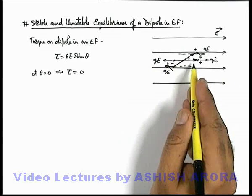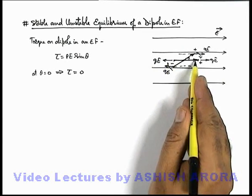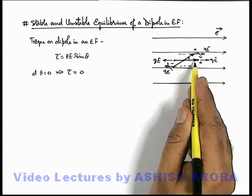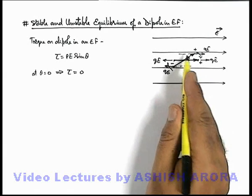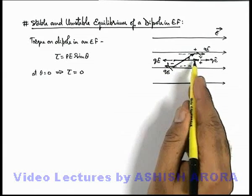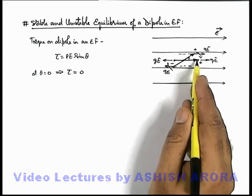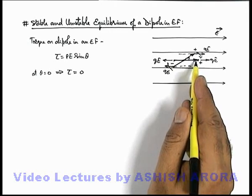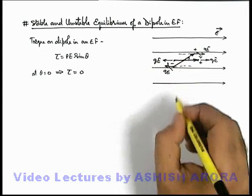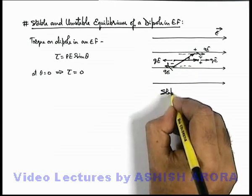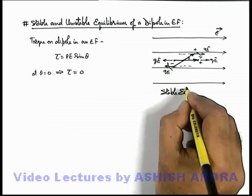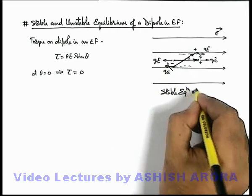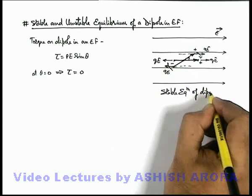That means if the dipole is slightly rotated, it experiences a restoring torque due to which it has a tendency to return to its initial equilibrium position. So this is the situation of stable equilibrium of a dipole in an electric field.